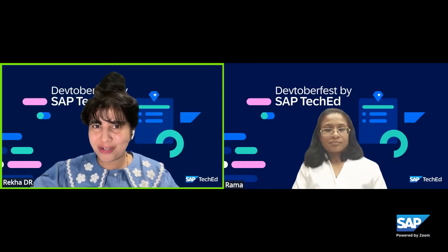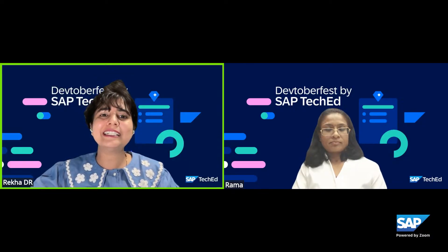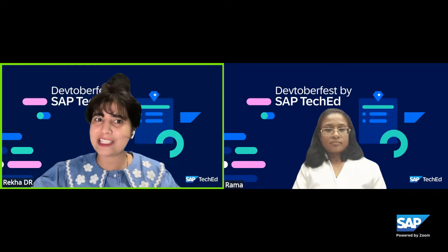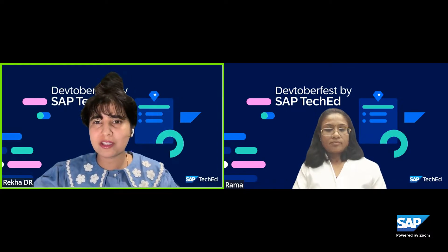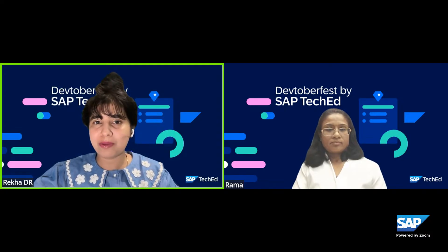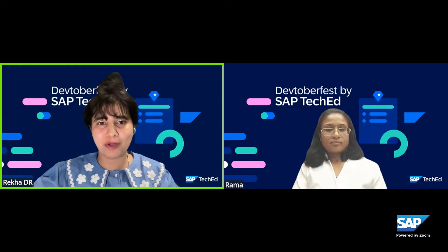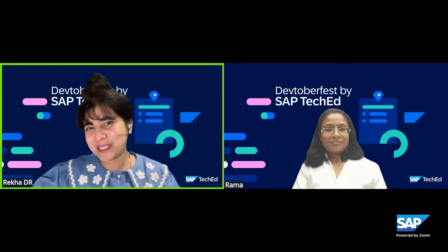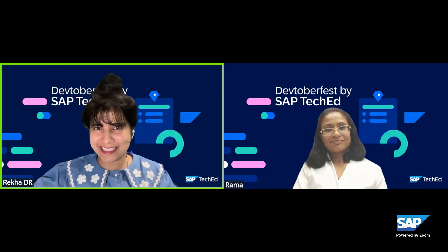Rama is a Senior Product Manager for SAP Build Process Automation. She is a technical product expert with nearly 20 years of experience in SAP technology such as SAP Business Technology Platform, SAP Business Rules Management, SAP Business Accelerator Hub, and SAP Mobile Services. She is currently a Product Manager for SAP Build Process Automation. It's time to hand over to the speaker for topic presentation.